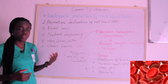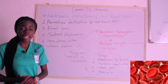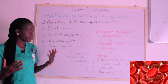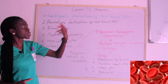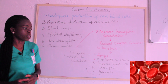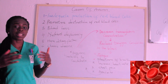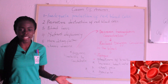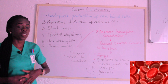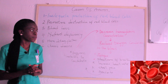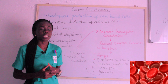The fifth cause is hereditary factors — for example, sickle cell anemia is a hereditary factor that can result in anemia. Another cause is chronic diseases, such as chronic kidney disease and infection, which can all result in anemia. That takes us to the pathophysiology.